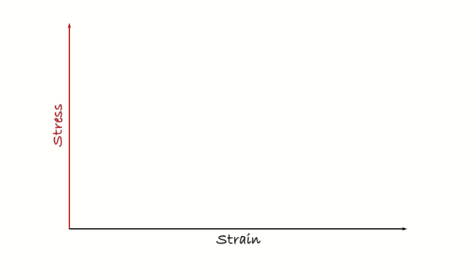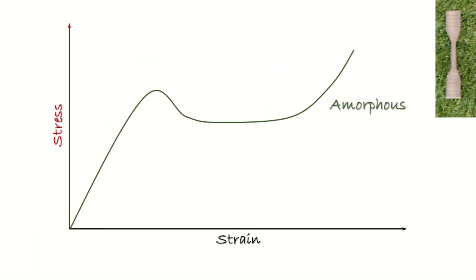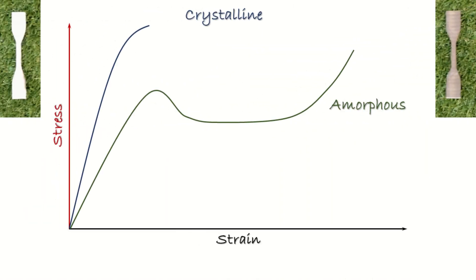Let's draw a stress-strain plot to explain that. The tensile properties of the amorphous part will look like this. A part that is fully crystallized at higher temperature will look like that. Same polymer with completely different properties.